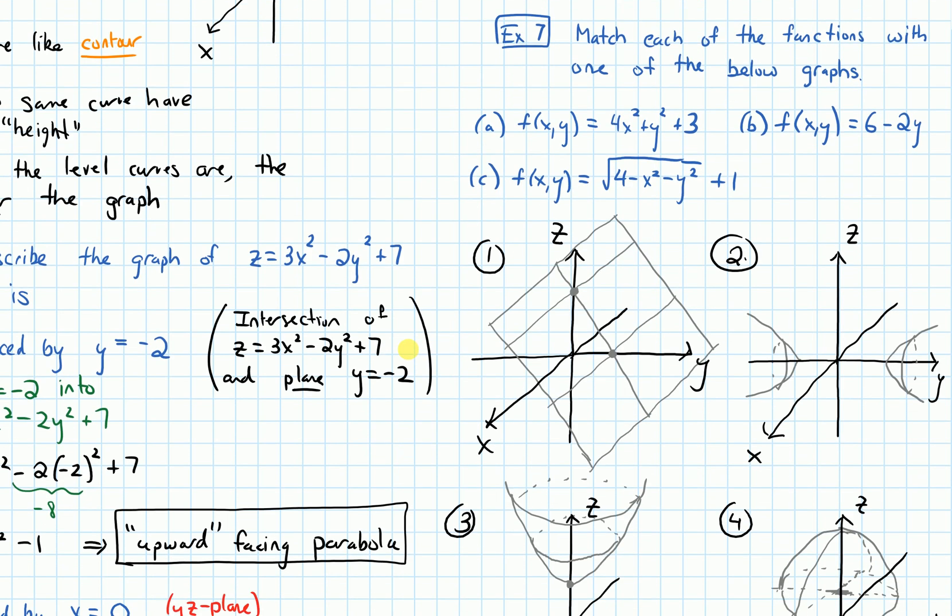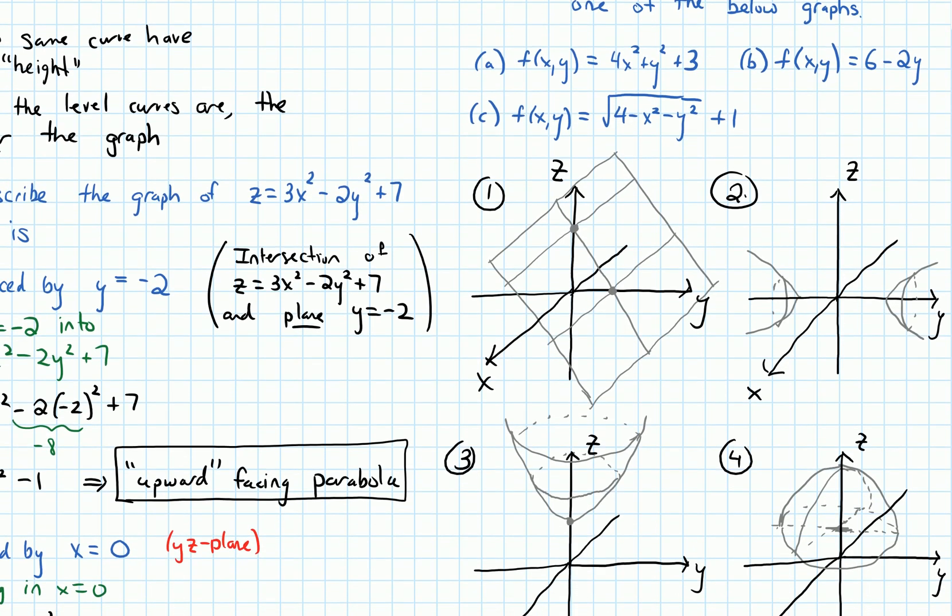There are four graphs that are given here. Three functions, so each one of the functions should match up with one of these graphs. So that means one of the graphs is extraneous. It doesn't match up with any of these functions.